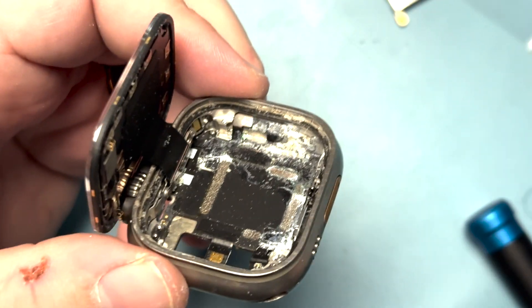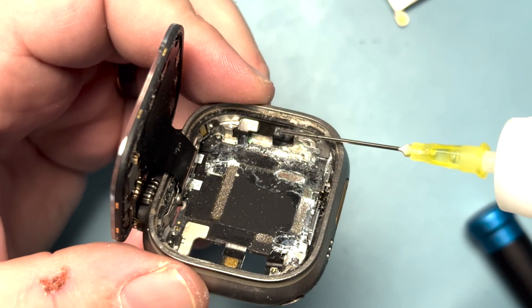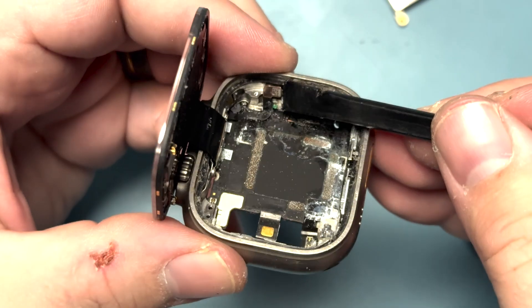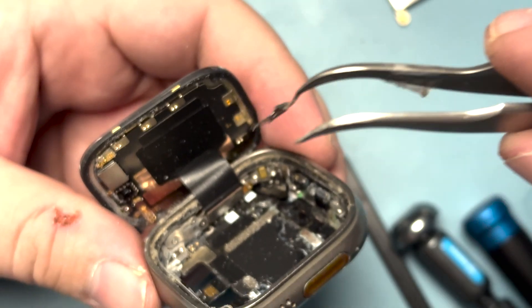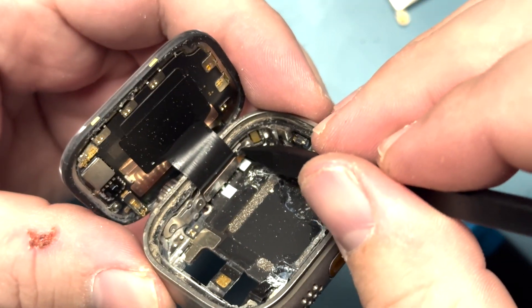We'll add some isopropyl alcohol to help break up the corrosion a little bit. Let's take off the display. There's a couple screws here and a little bracket. Now we can pop the display connector.